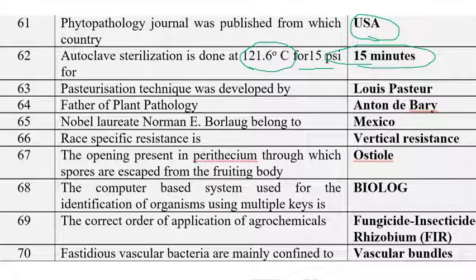Pasteurization technique was developed by Louis Pasteur for pasteurizing milk. The pasteurization temperature for milk is 62.8 degrees Celsius. For beer, it is approximately 54-55 degrees Celsius — the temperature varies according to the liquid being pasteurized.